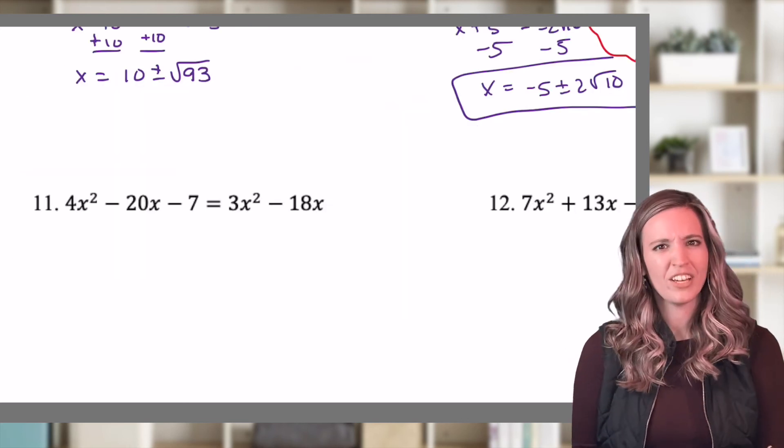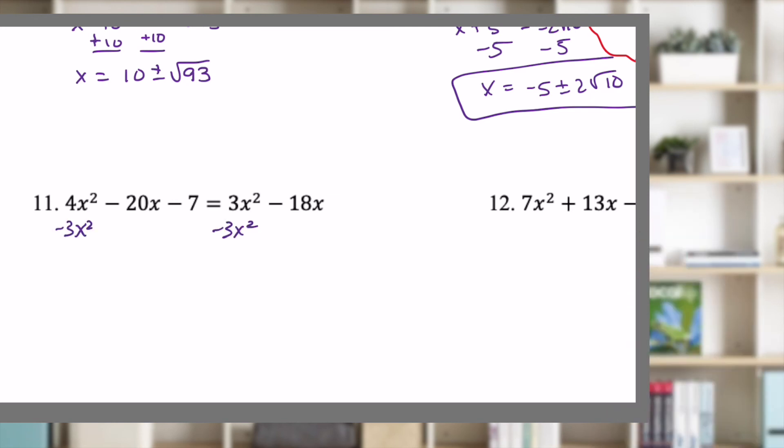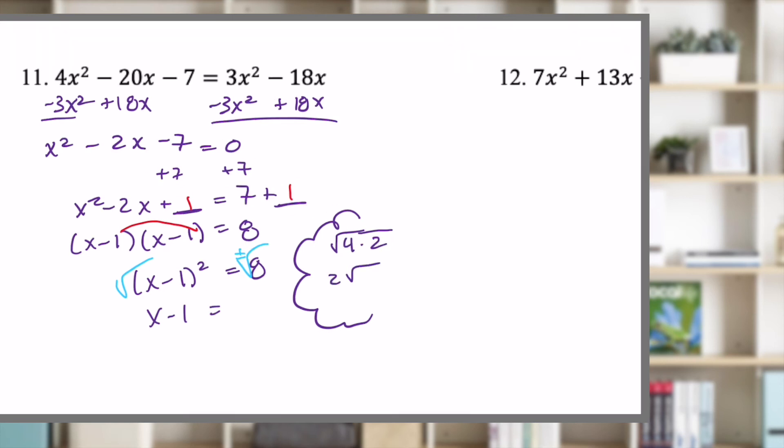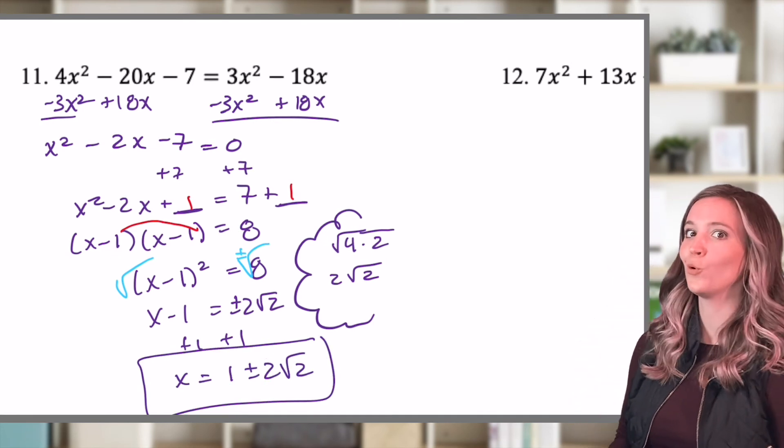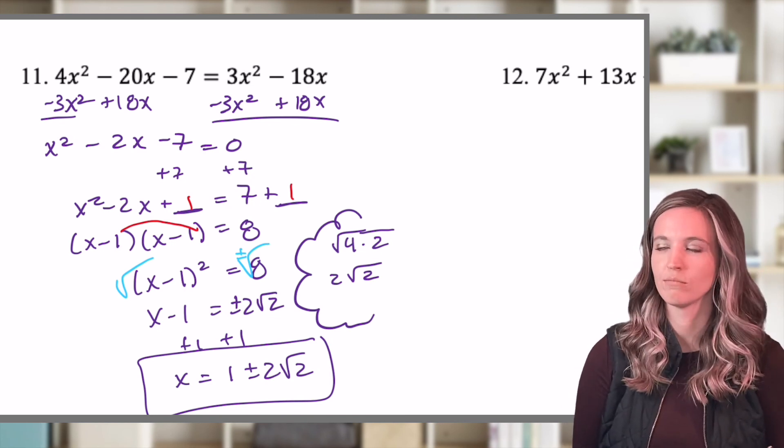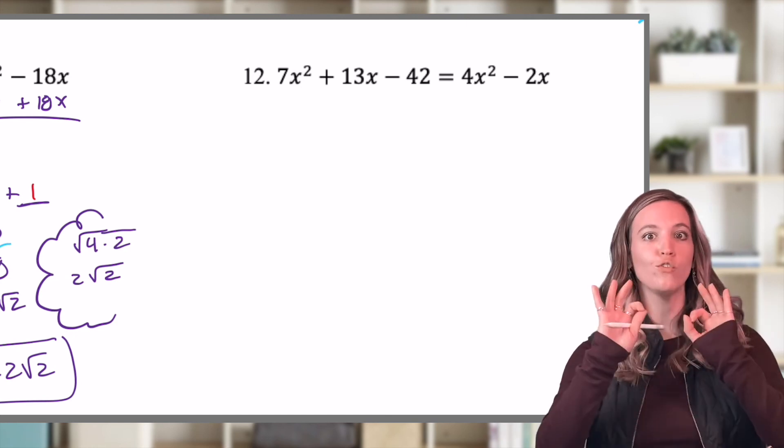Oh, there's a lot going on in number 11. Go ahead and get it set equal to zero first, and then you can complete your square. x equals 1 plus or minus 2 root 2. Be sure you simplified that radical. Don't have root 8 in my final answer. This last one is all you. Get it equal to zero. Complete your square. You've got this.